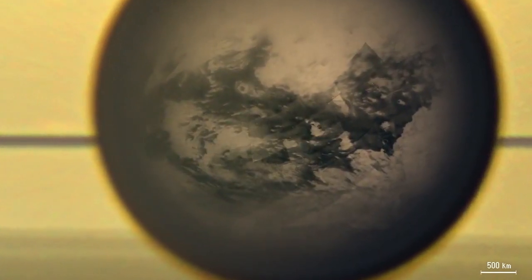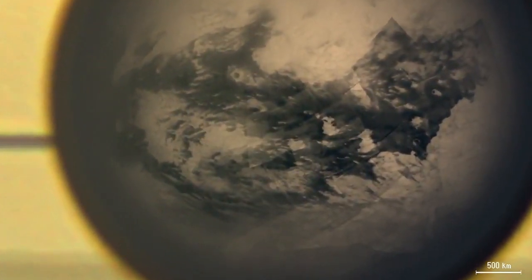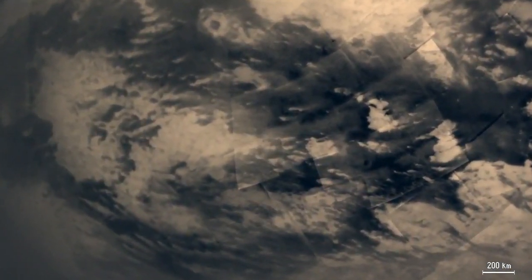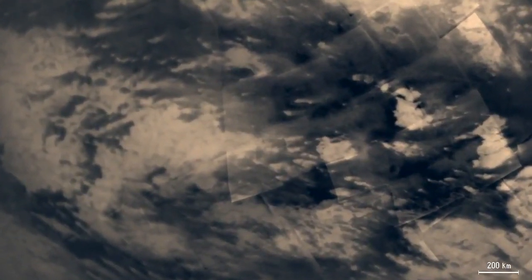Features on Titan's surface appear. The dark regions along Titan's equator are mostly dune fields. The brighter regions are highlands a few hundred meters high.